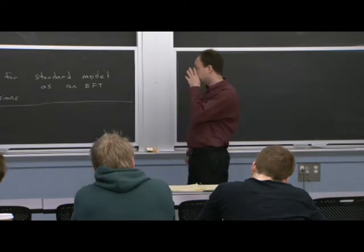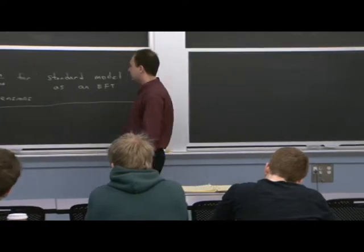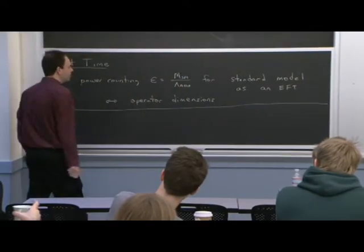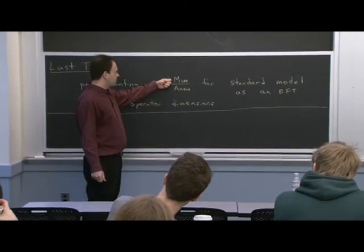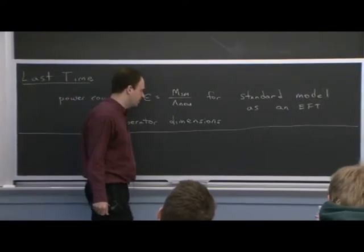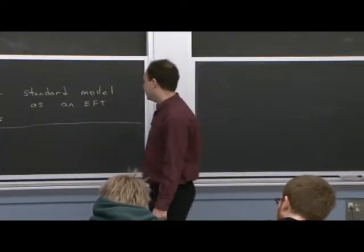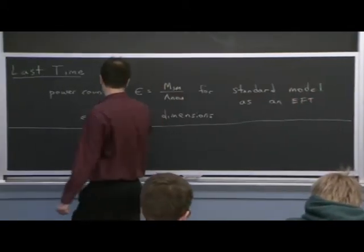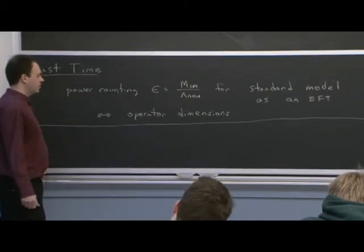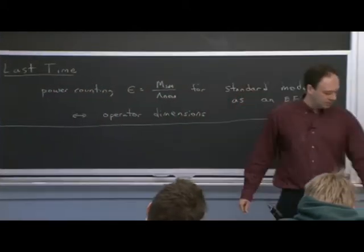Last time we were talking about the standard model as an effective field theory. We decided that the power counting would be in epsilon — the masses of the particles in the standard model, the scales in the standard model, divided by some new physics scale outside the standard model. I made the statement that this was connected to operator dimension, but I didn't make that precise. I want to do that now as the first thing we do today.